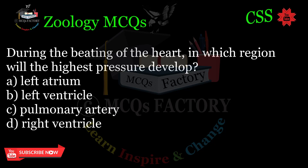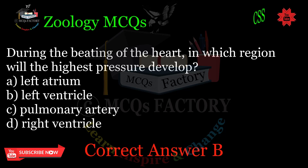During the beating of the heart, in which region will the highest pressure develop? A. Left atrium. B. Left ventricle. C. Pulmonary artery. D. Right ventricle. Correct answer: B.